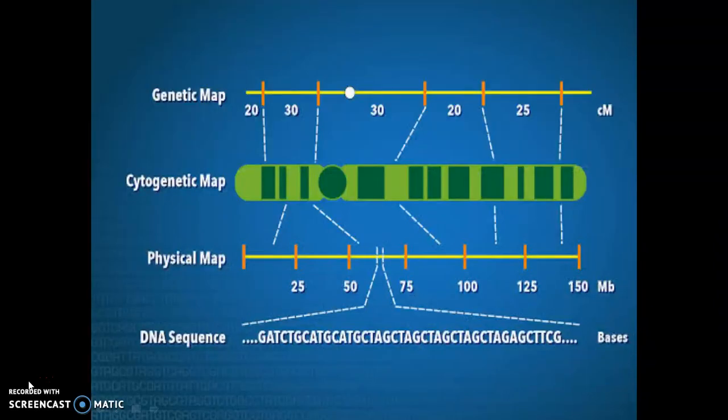What is a genetic map? It defines the position of genes on the chromosome, and the distance of these genes is measured in terms of centimorgan. The formation of a linkage map requires four different components: namely mapping population, suitable marker system, robust computer software, and phenotype data.